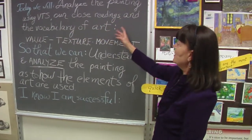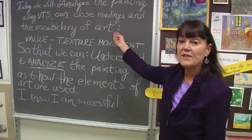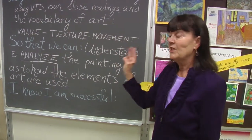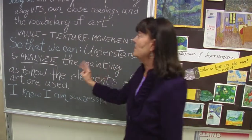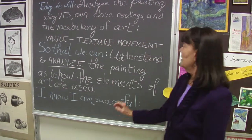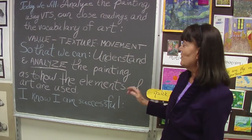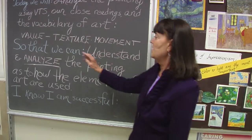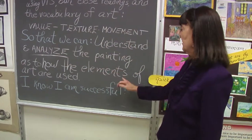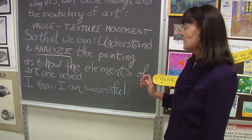Our close readings and the vocabulary of art — this is called our academic vocabulary. Today's vocabulary is value, texture, and movement. Why are we doing this? So that we can understand and analyze the painting as to how the elements of art are used.